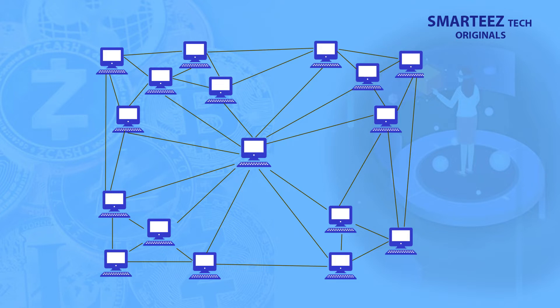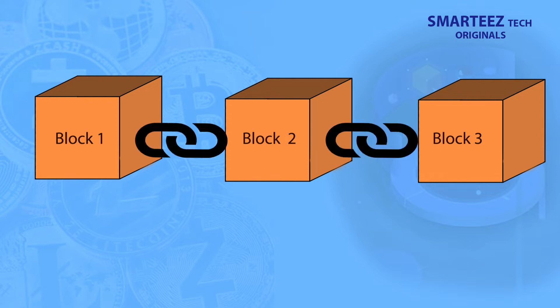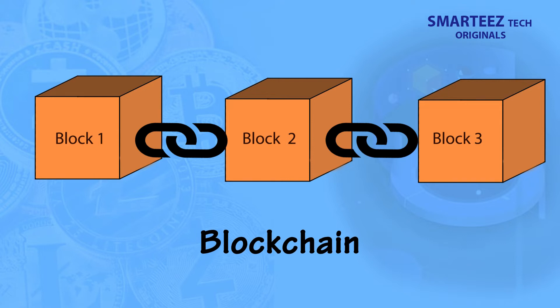In simple terms, you have a bunch of blocks that have pieces of information on them, and they are linked to each other making it look like a chain of blocks — and that is blockchain. Just kidding about being done — what we said is true, but that doesn't explain why it has assumed so much importance. Let's dive into the details now.